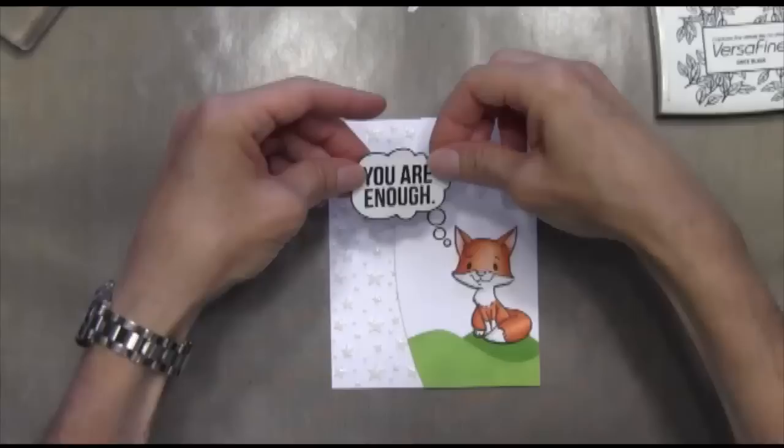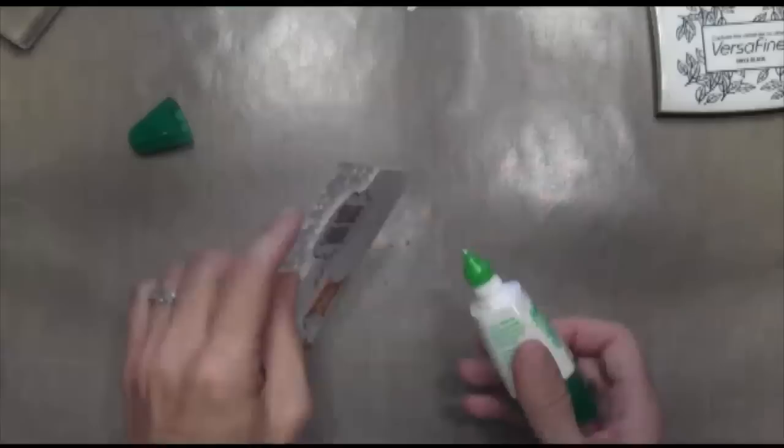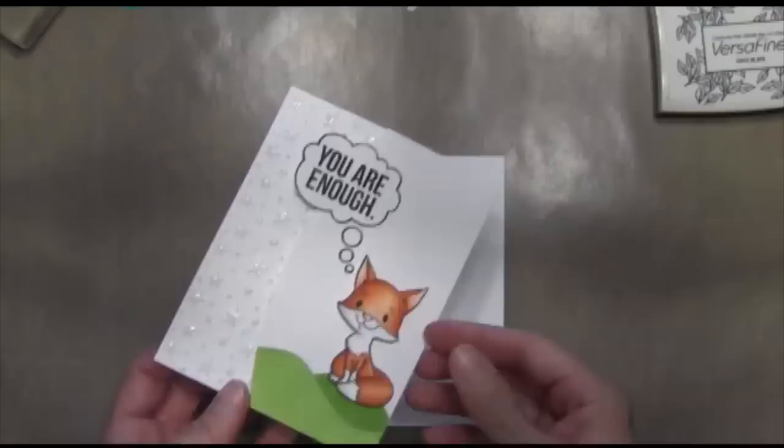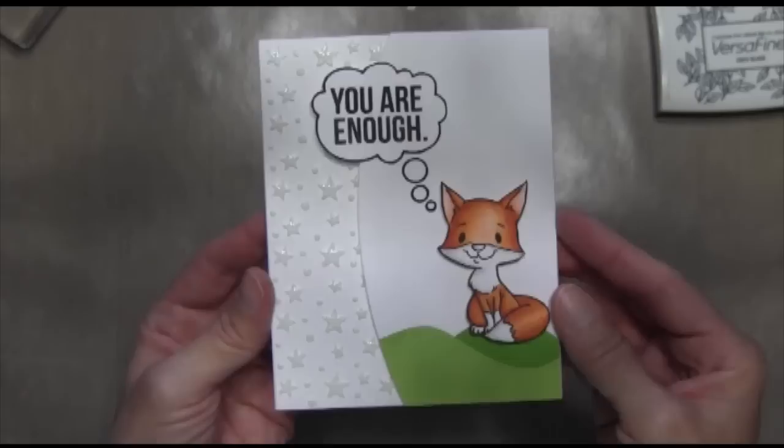These little bubbles are part of the He Said, She Said, where the speech bubbles were from, the same stamp set, and I'm just going to adhere that with some tape runner. I noticed it was kind of popping off a little bit, so I just put some Tombow glue right there underneath it to hold it in place. Finally, I'm just going to adhere this panel to a folded four and a quarter by five and a half inch piece of Neenah Solar White cardstock.